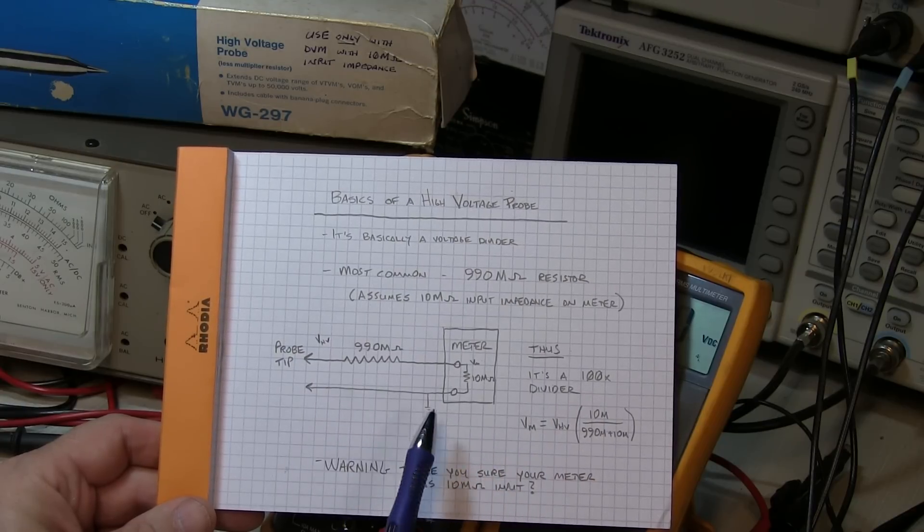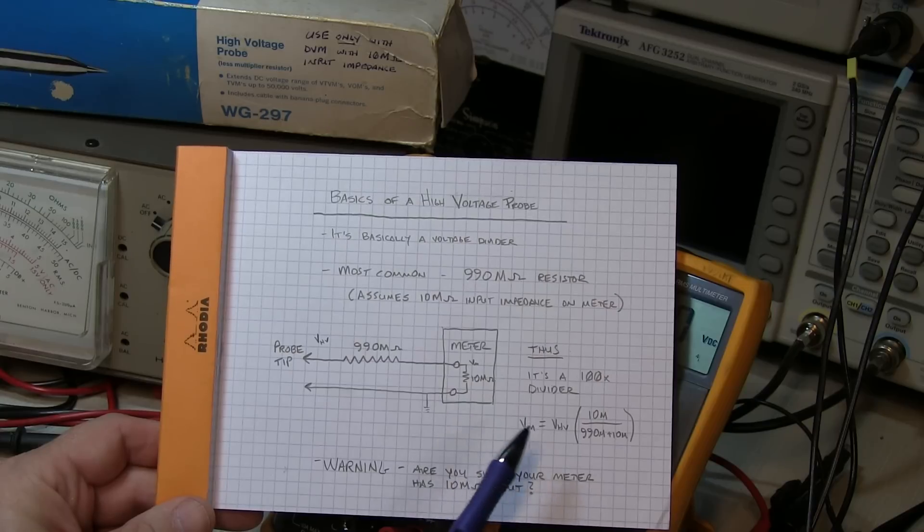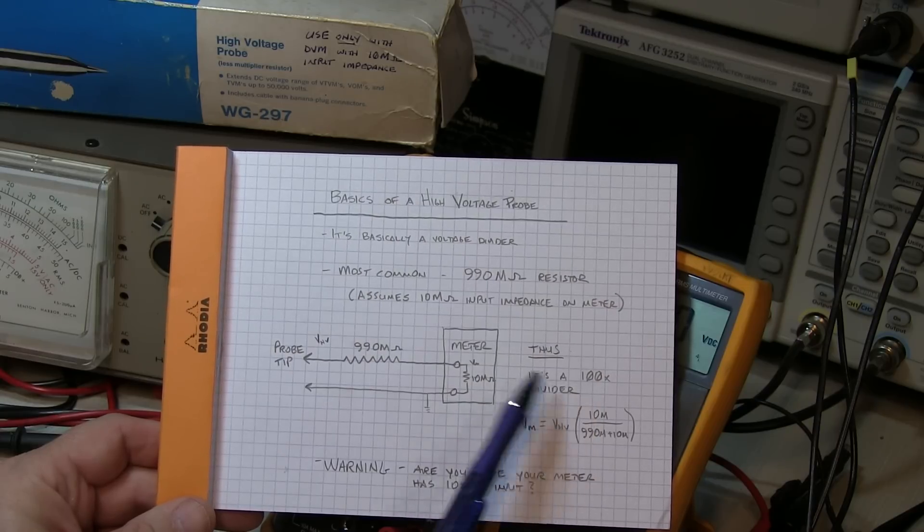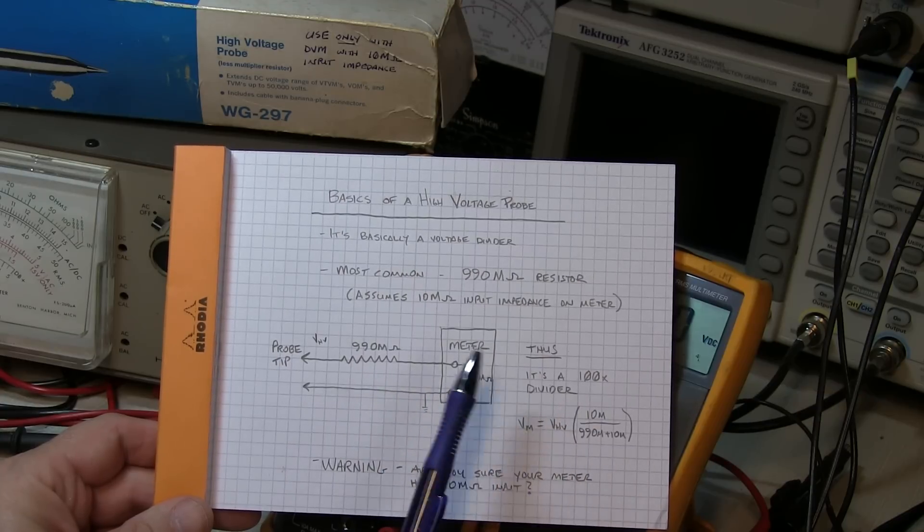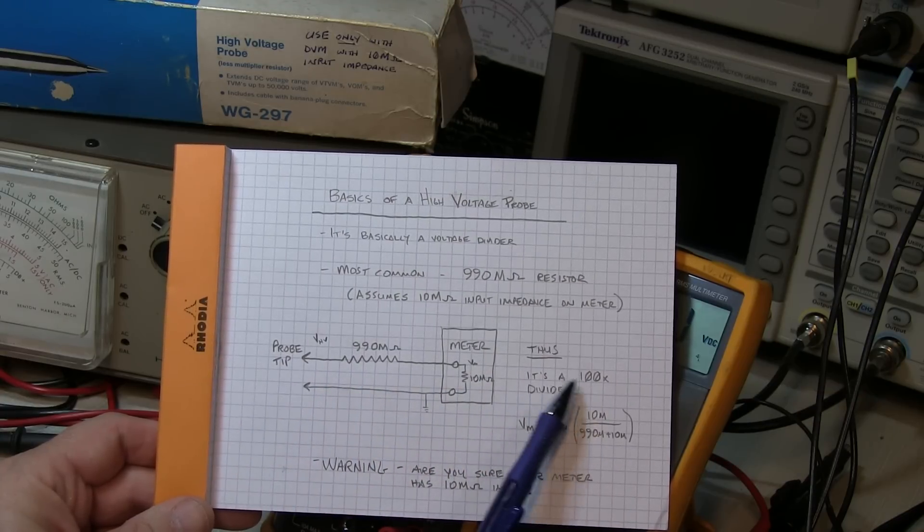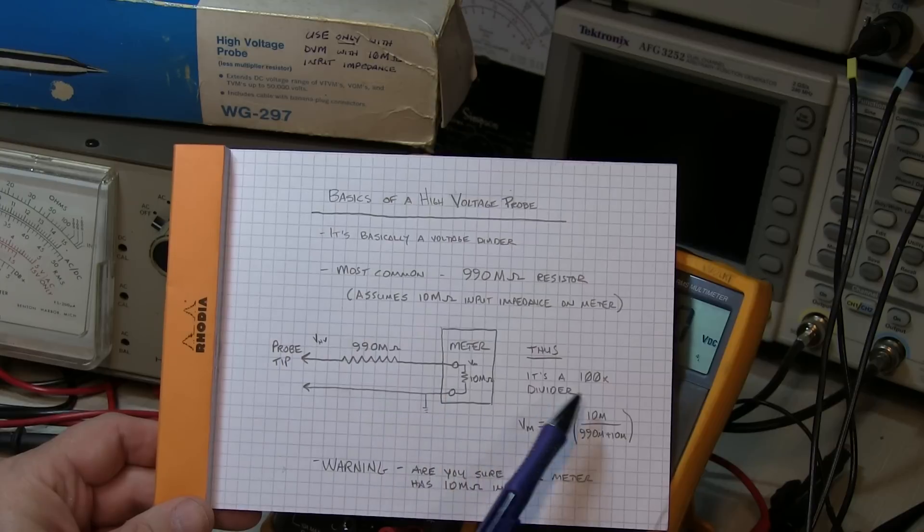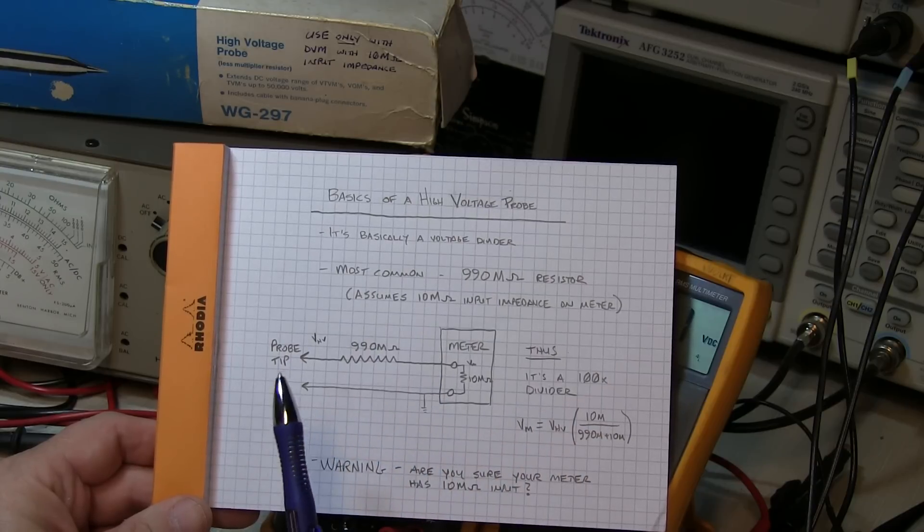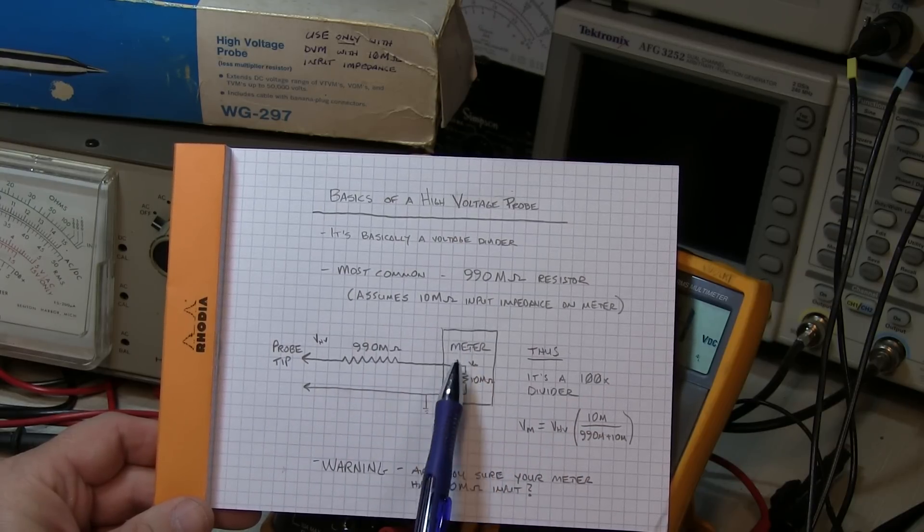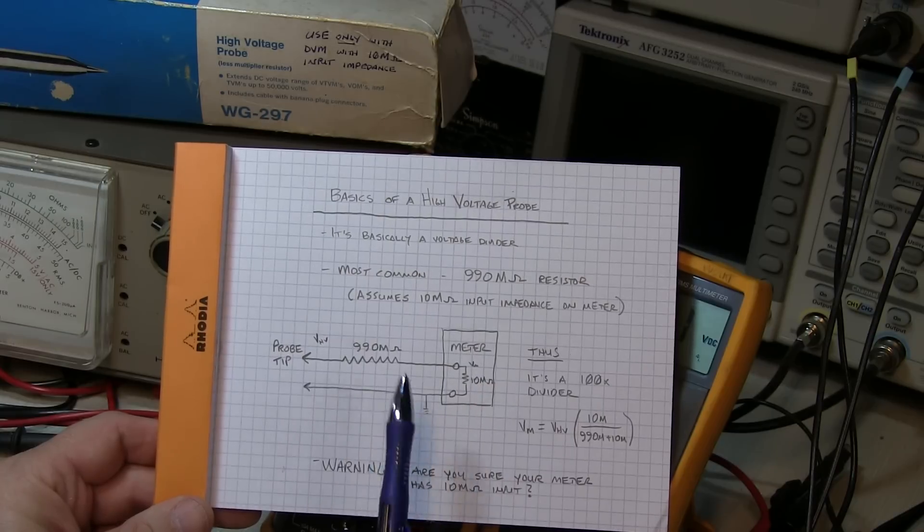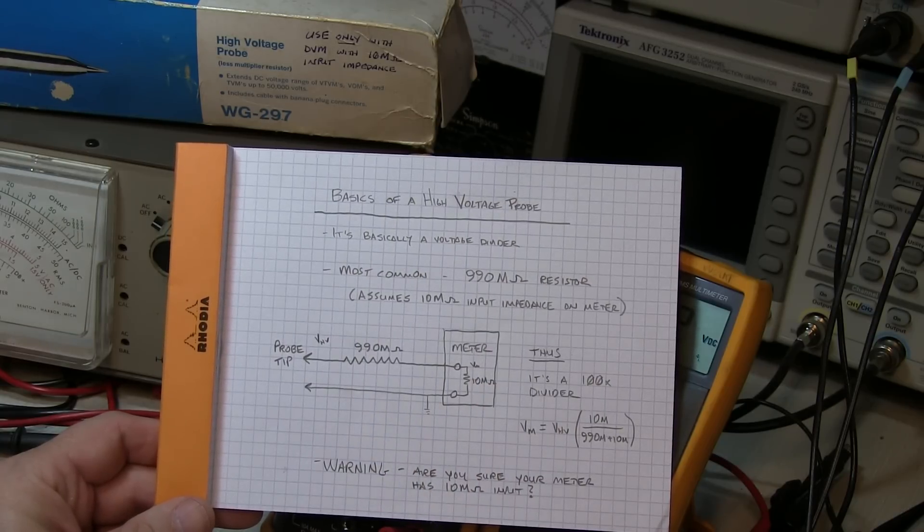So if you've got your meter on a 4 volt scale, then it would make it a 400 volt scale. If it's on a 40 volt scale, it would be a 4,000 volt scale, that type of thing. So you basically multiply your meter reading by 100x. Now again, this assumes that you've got a 10 mega ohm input impedance on the meter. We'll talk more about that in a moment.